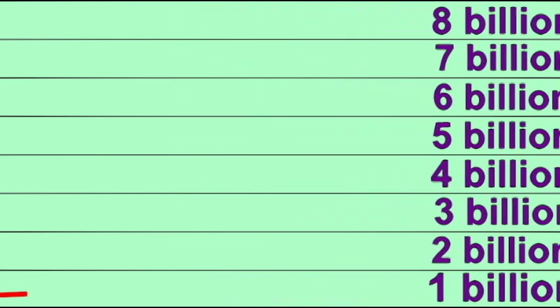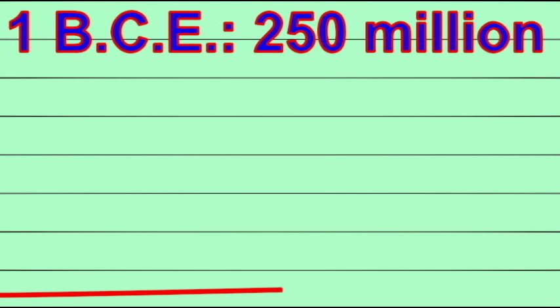For the vast majority of human history, there were well under a billion people, in fact, well under half a billion people who lived on this planet. Around the time of Caesar, 1 BCE, it's estimated that there were 250 million people on planet Earth.